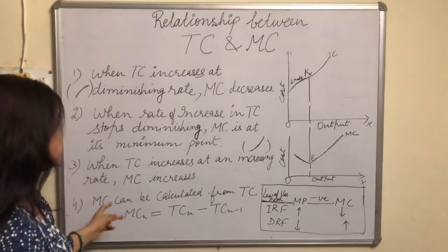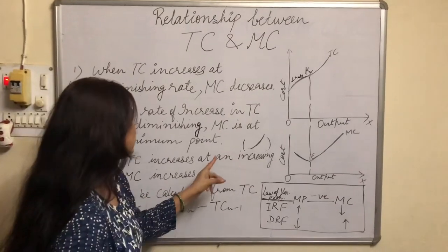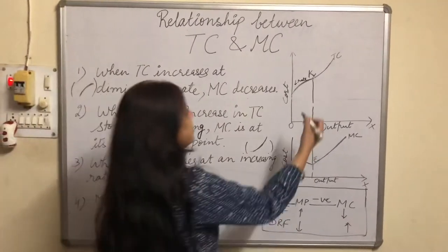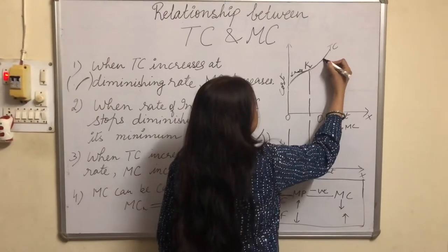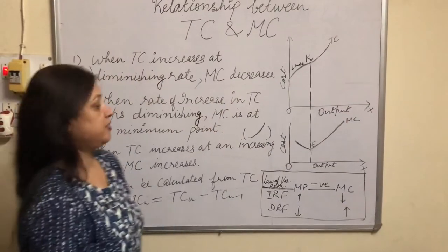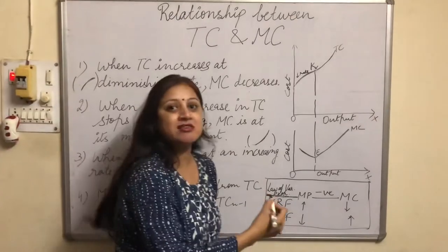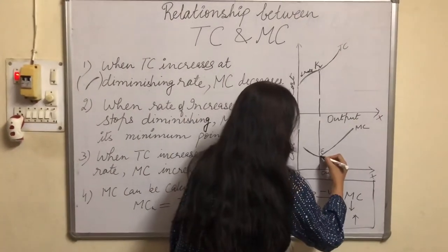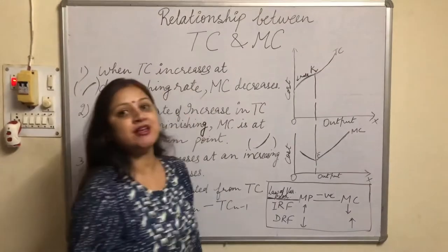Now the third point: when TC increases at an increasing rate. Here you can see TC is increasing at an increasing rate. So what happens to MC? MC increases. See, MC is going upwards, so it is increasing.